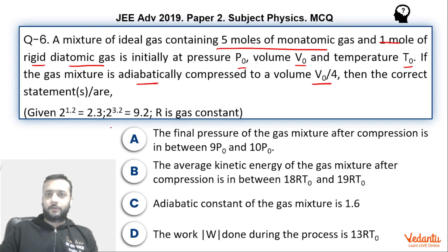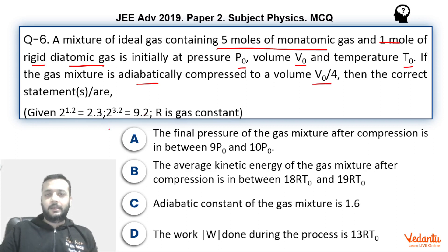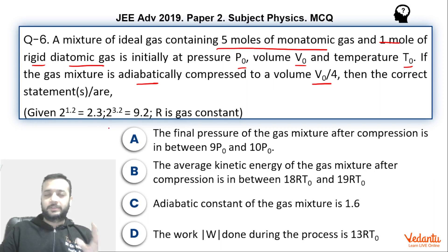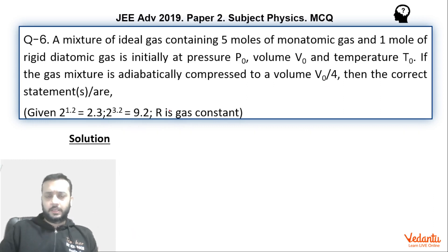For our help, the IIT has also given some values so that we are eased out for calculation purposes. This was the hallmark of this paper; in 2020 it was quite the opposite — they did not give any such values and it was totally left for the students to do very tedious calculations. So in this regard this paper was very nice. Let's do this question.